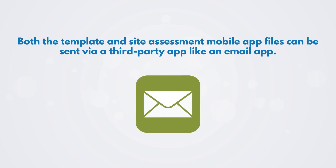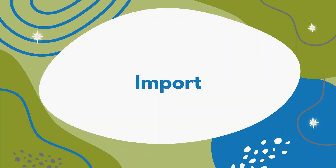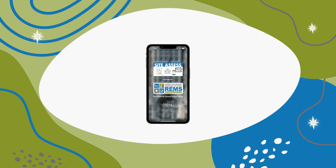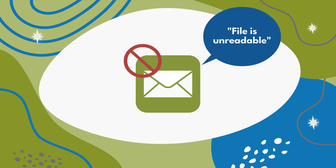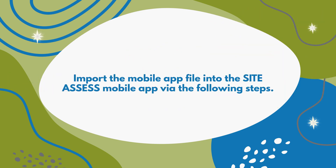Both the template and site assessment mobile app files can be sent via a third-party app like an email app. The mobile app file was created by the REMS TA Center and can only be accessed in and from the SiteAssess mobile app. You will not be able to open it by clicking on it in your email app, so do not be alarmed if you receive an error that the file is unreadable. Import the mobile app file into the SiteAssess mobile app via the following steps. It does depend on the operating system you are using — Android or iOS.